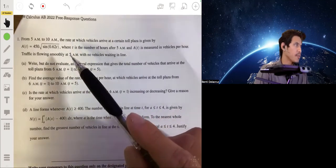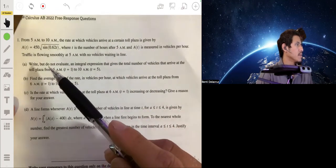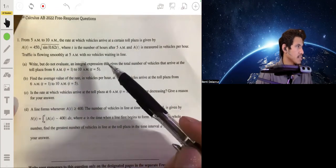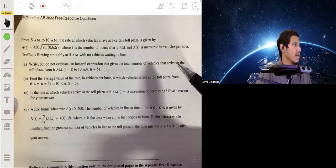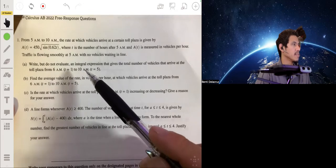Traffic is flowing smoothly at 5 a.m. with no vehicles waiting in line. Part A, write, but do not evaluate an integral expression that gives the total number of vehicles that arrive at the toll plaza from 6 a.m. or T equals 1 to 10 a.m., T equals 5.